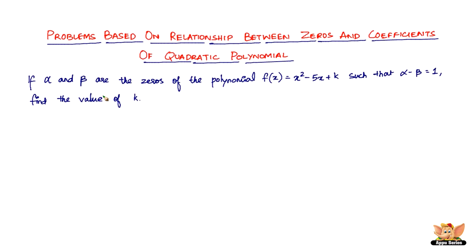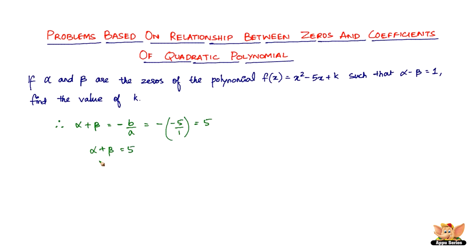Since alpha and beta are the zeros of the polynomial x² - 5x + k, we have the sum of the zeros: alpha + beta = -b/a. Here b is -5, so minus of -5 divided by 1 gives alpha + beta = 5. And the product of the zeros is c/a, which is k/1, so alpha * beta = k.